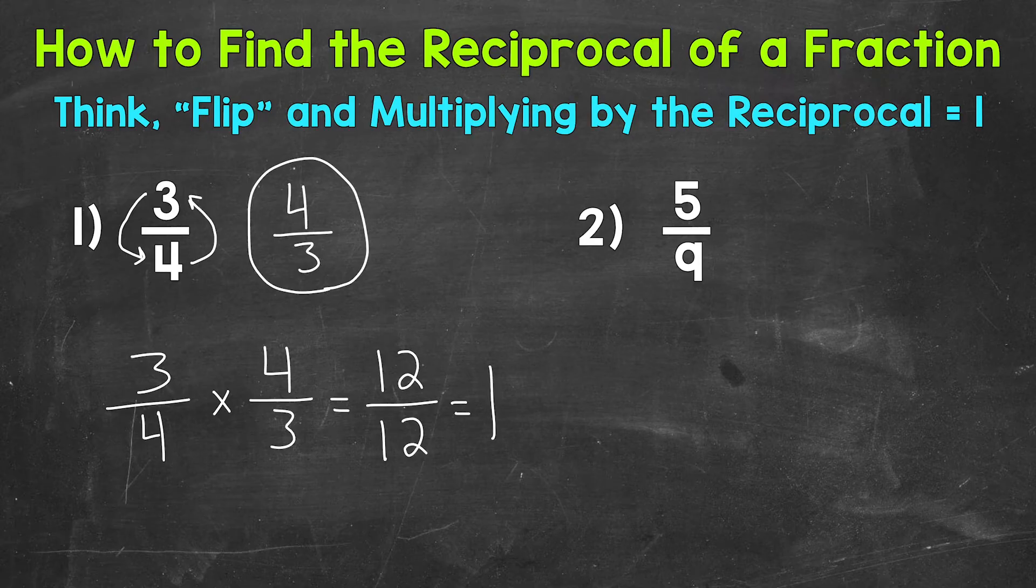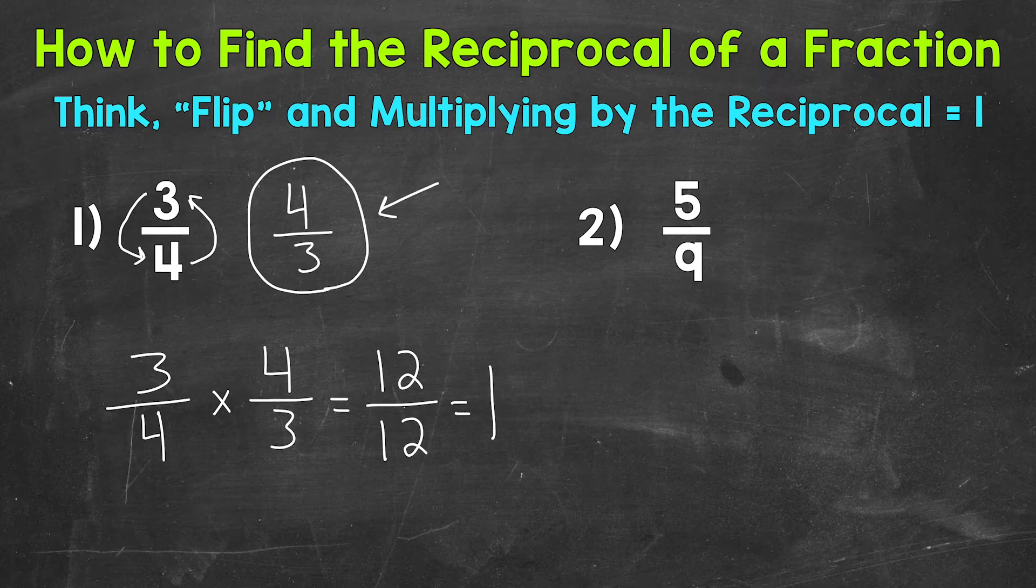So again, the reciprocal of 3 fourths is 4 thirds. Let's move on to number 2, where we have 5 ninths.